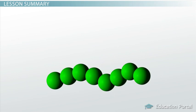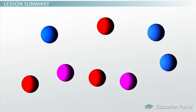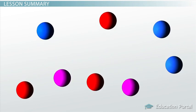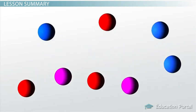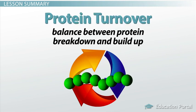Let's review. Protein consists of a chain of amino acids bonded together. Your body is constantly breaking down protein molecules into their individual amino acids, which are then used to build or synthesize new proteins. The balance between protein breakdown and buildup is referred to as protein turnover.